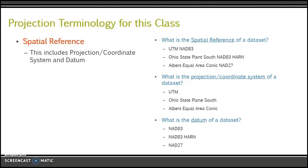More often than not, I'll ask you to split these out because I need you to understand that one part of the name is the projection and one part is the datum. If I ask for the projection, tell me UTM, State Plane, Albers, Lambert, etc. When I ask for the datum, tell me NAD 83, NAD 27, or WGS 84. In the next couple of years, a new set of datums are actually coming out — it's been delayed because of COVID — and you'll get to experience what the GIS world feels like when there's a new datum on the horizon that we start moving all our data to.